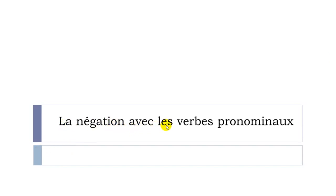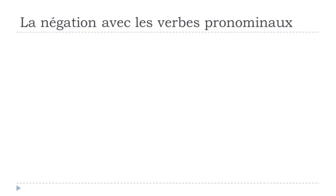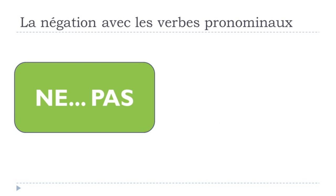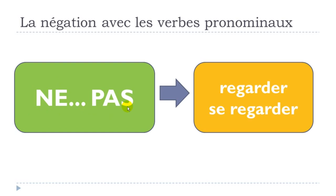La négation avec les verbes pronominaux. When we talk about la négation in French, we are normally talking about two different parts: the first one is NE, and the second one is PAS. In this video, we will focus on les verbes pronominaux — verbs that have SE in front of them at the infinitive form.